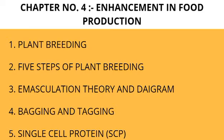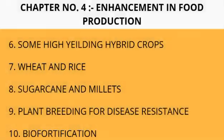Then bagging and tagging, which covers diagrams as well. Then SCP — Single Cell Protein. There are some high-yielding hybrid crops, including wheat, rice, sugar, and millets. Then plant breeding for disease resistance.